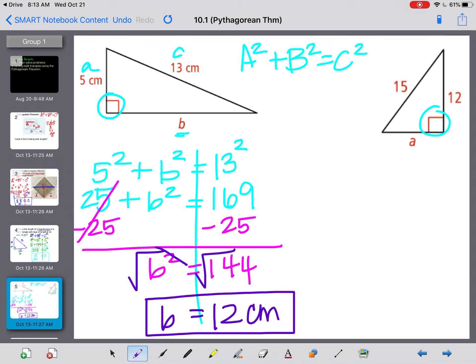It is one extra step when I have a different letter besides C missing, but it's nothing that you haven't done in the past. On this second one, if this bottom one is A, the 12 has to be B, because that is our hypotenuse, which is C. So I will have A squared plus 12 squared equals 15 squared.